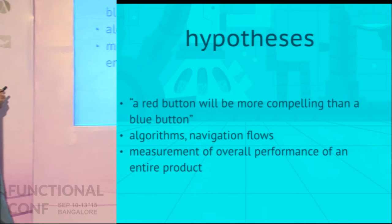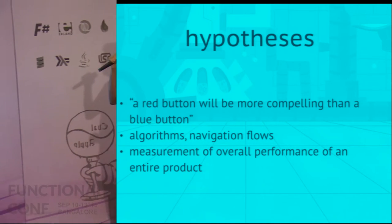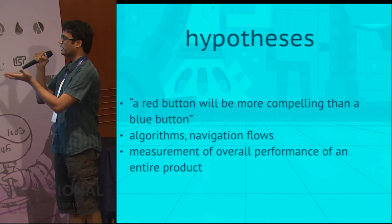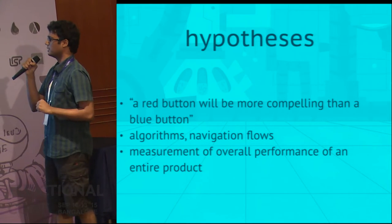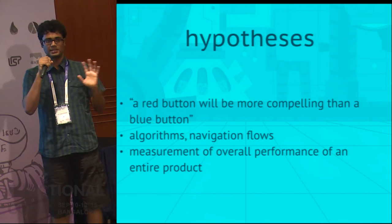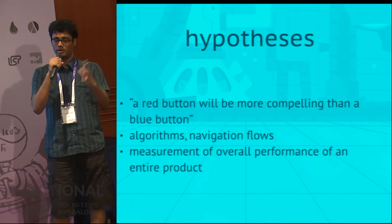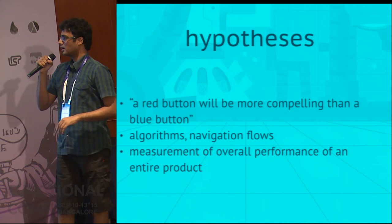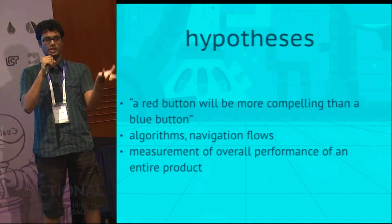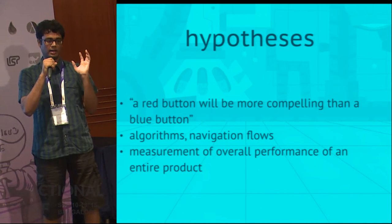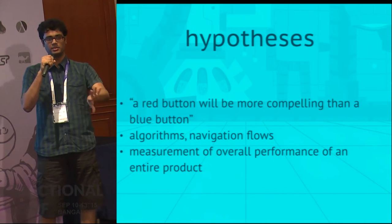We'll go through a few basic terms before we jump into the details of experiment infrastructure. A term like hypothesis can use some explanation. It can be as simple as a red button being more compelling than a blue button on the web. You can also say that one model for making an offer to a user is more effective than another model.